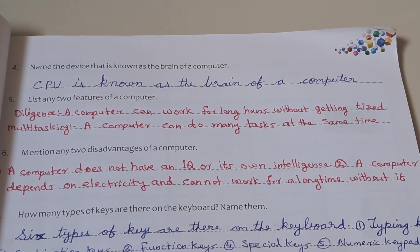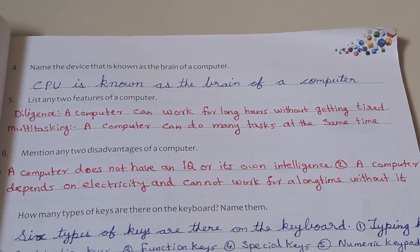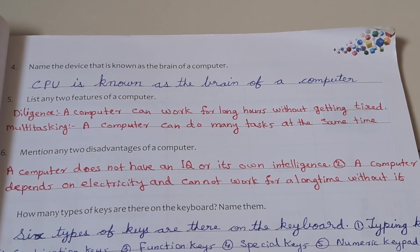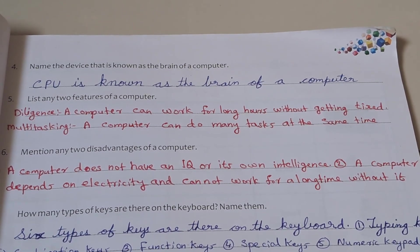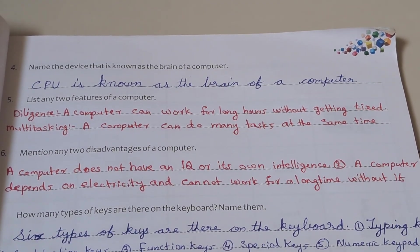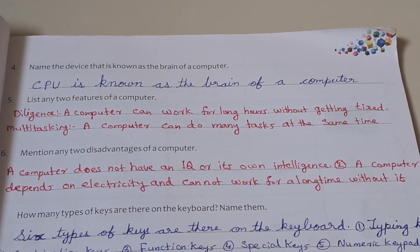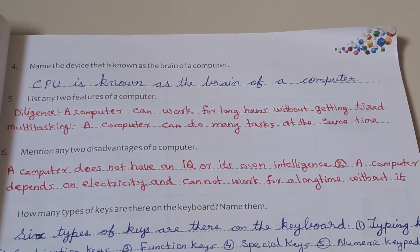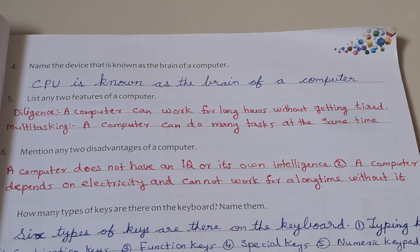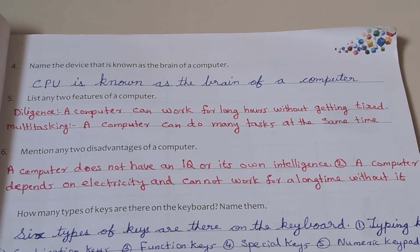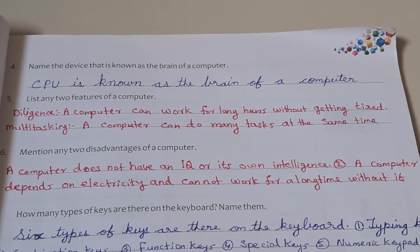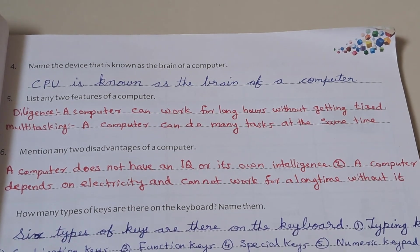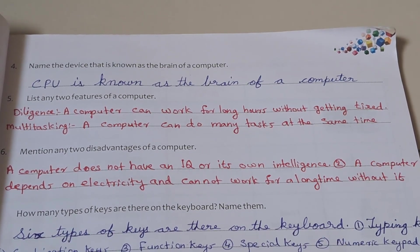Question 6: Mention any two disadvantages of a computer. Answer: First, a computer does not have an IQ or its own intelligence. Second, a computer depends on electricity and cannot work for a long time without it.